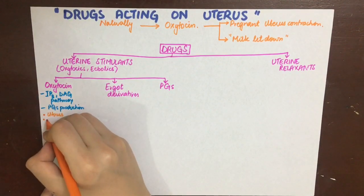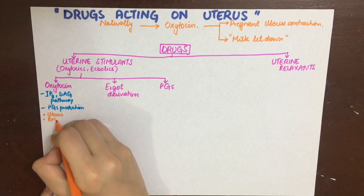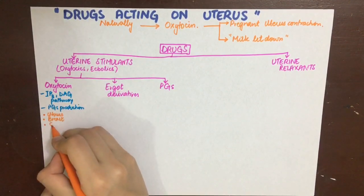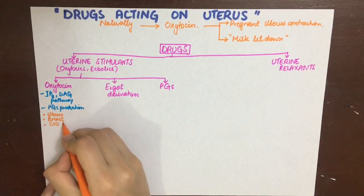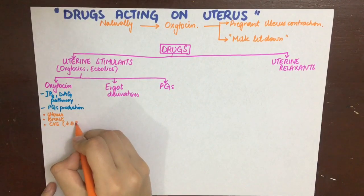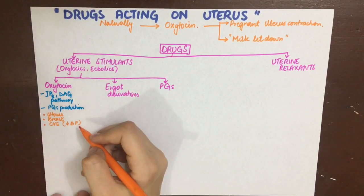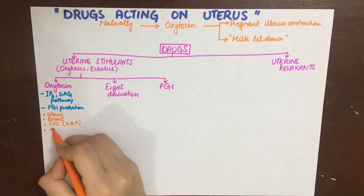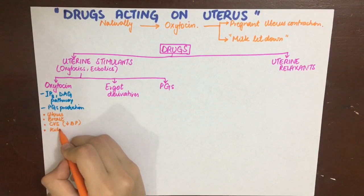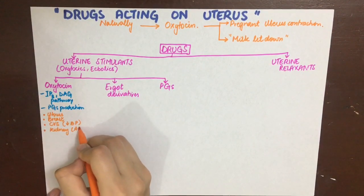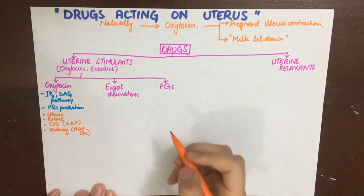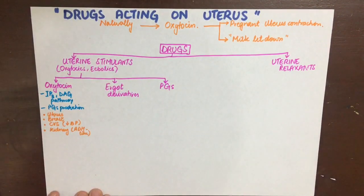In the breast, oxytocin causes contraction of myoepithelial cells and milk ejection. In the cardiovascular system, it can cause hypotension at high doses, and this hypotension in turn causes reflex tachycardia and flushing. In the kidney, oxytocin acts the same way ADH does and causes fluid retention.